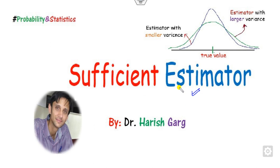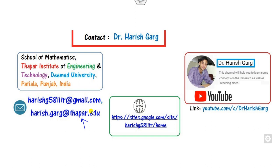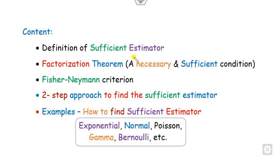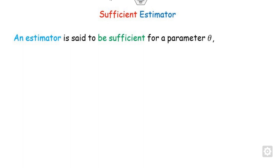Hello everyone, welcome to the next lecture on estimator theory. Today we will discuss what is the sufficient estimator and how we can find the sufficient estimator for any distribution. I am Dr. Gork, working in the School of Mathematics, Thapar Institute, India. The brief content of today's presentation includes the definition of the sufficient estimator, how we can find it based on the factorization theorem, the Fisher-Neyman criteria, and a two-step approach for finding sufficient estimators.